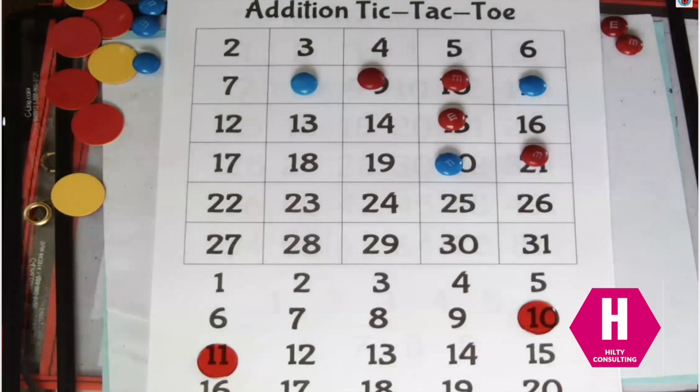Once your kids get good, make them get four in a row, five in a row, try for a whole column, try for a whole row, or make it you have to get the diagonal. It's up to you, but have fun playing. We'd love to hear your comments or see you and your friends playing this game at home. Have fun!